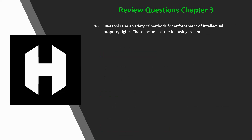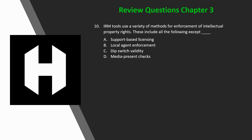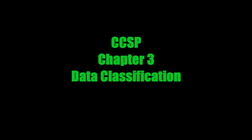And finally, question ten: IRM tools use a variety of methods for enforcement of intellectual property rights. These include all the following except for what? A) support-based licensing, B) local agent enforcement, C) dip switch validity, or D) media present checks. If you said C, dip switch validity — you would be right, because information rights management solutions use all the other methods except dip switch validity, which isn't even a real term.